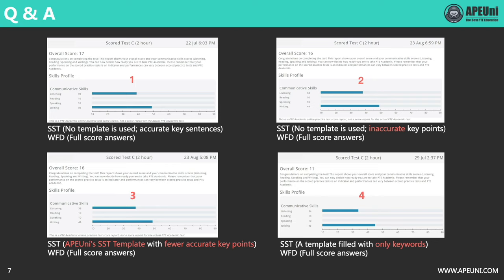Then we moved on to test what happens if we use a template in SST. So in test 3, we used the APE SST template in our answer. But because the template itself consists of around 20 words and there is a word limit of maximum 70 words, we decided to choose accurate key sentences but deleted some of them to meet the word limit requirements. We answered with fewer accurate key points in this test. Same as test 2, we got 38 in listening and 49 in writing.